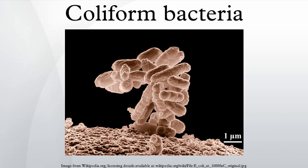Escherichia coli, a rod-shaped member of the coliform group, can be distinguished from most other coliforms by its ability to ferment lactose at 44°C in the fecal coliform test, and by its growth and color reaction on certain types of culture media. When cultured on an EMB plate, a positive result for E. coli is metallic green colonies on a dark purple media. E. coli has an incubation period of 12–72 hours with the optimal growth temperature being 30–37°C.